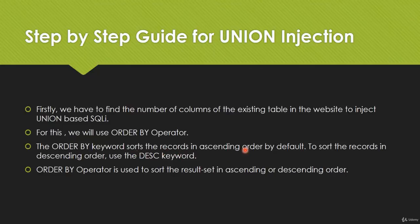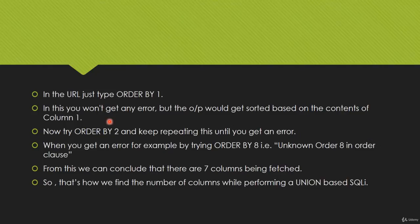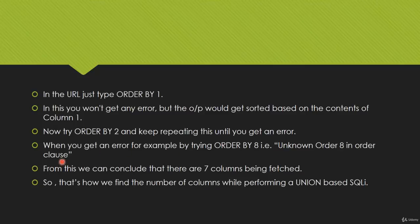To sort in descending order, we use the DESC keyword. In the URL, type ORDER BY 1 — if you don't get an error, move to ORDER BY 2, and keep repeating until you get an error. For example, if ORDER BY 8 returns 'unknown column 8 in order clause', we can conclude there are only seven columns being fetched by the first query. After that, we can apply our UNION command.